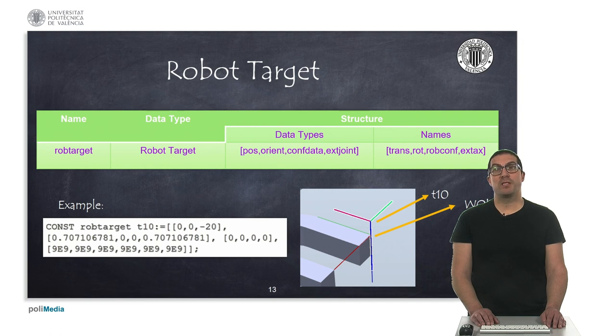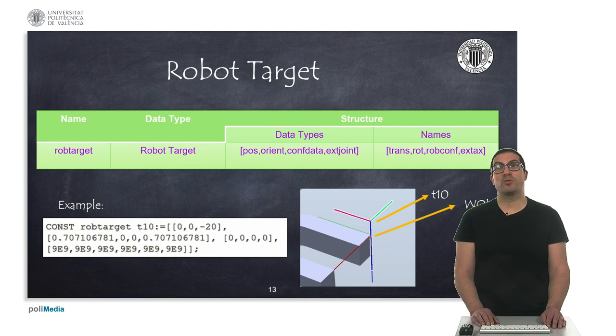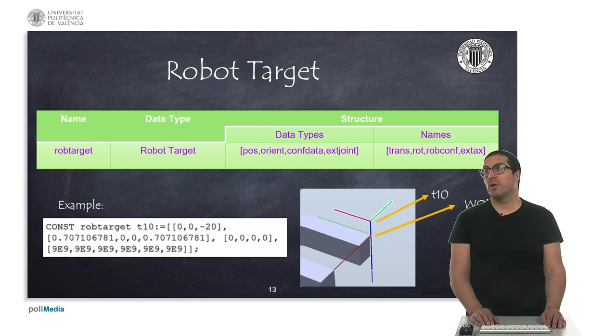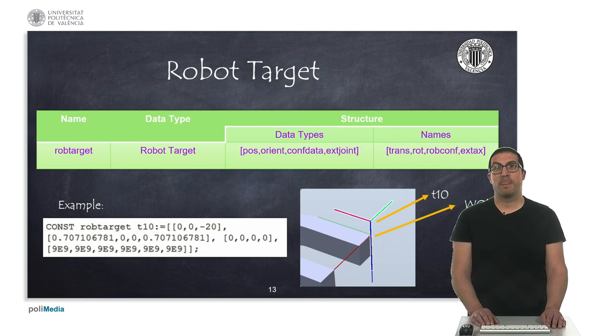And finally, we will explain one of the most used data types. This is RobTarget. It's a composite type to define the position and orientation of a reference frame, as well as to indicate a specific robot configuration to be used and the values for the external joints. Here, we see how to set a target position. In this case, defined with a negative 20mm from the z-axis, and also with a 90 degrees rotation in the z-axis, around the z-axis. That corresponds to the quaternion, in this case 0.7, 0, 0, 0.7. This selected configuration is 0, 0, 0, 0. And in this case has no external joints. This position is relative to another reference frame. In this case, indicated by the name WObject, which means working object. This is something we will see when defining the motion instructions.